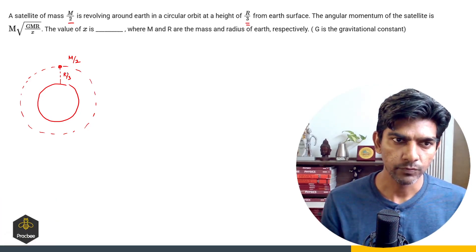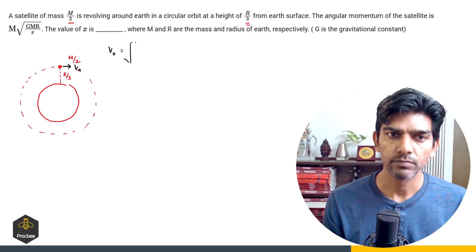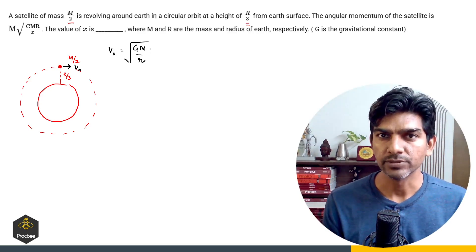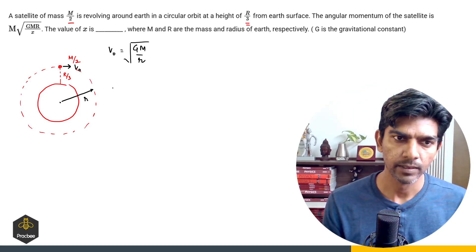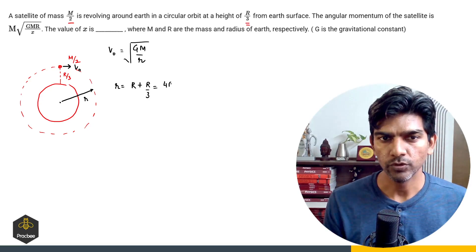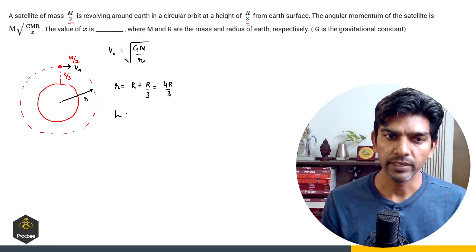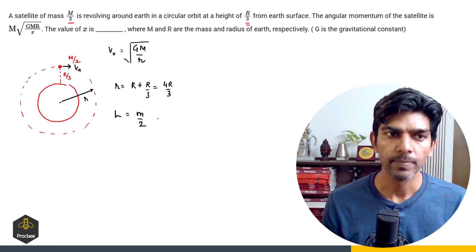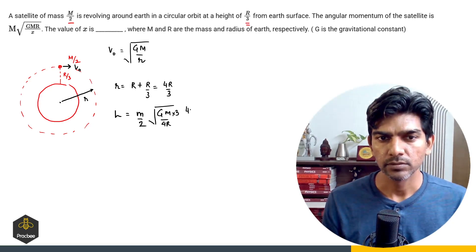First of all, we should know the formula of orbital velocity of a satellite. Orbital velocity is given as root of GM divided by small r, where G is the gravitational constant, M is the mass of the earth, and r is the orbital radius. In this case, the orbital radius will be radius of the earth plus R/3, so it becomes 4R/3. The angular momentum of the satellite about the center of the earth is L = mvr. Mass of the satellite is M/2, velocity is root of GM divided by 4R/3, and r is 4R/3.